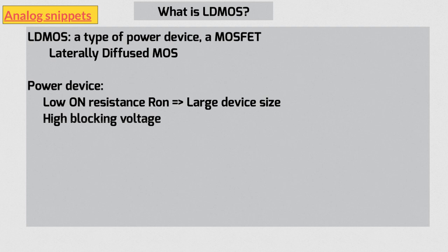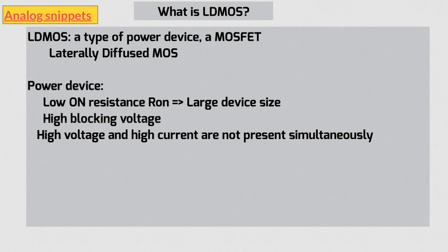High power usually means high voltage and high current. But in a given device, both high voltages and high currents are not present simultaneously, at least not for a sustained period of time. Let's now look at how high blocking voltages are achieved.